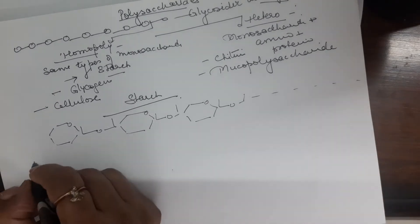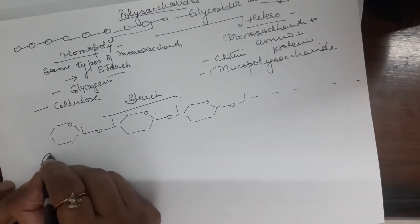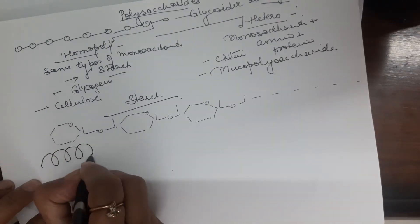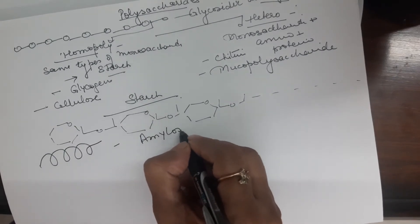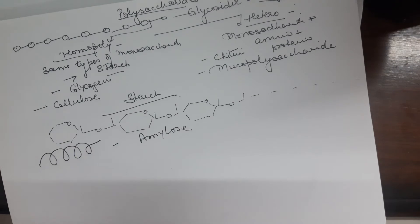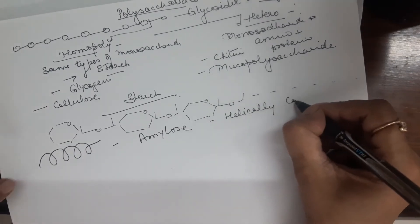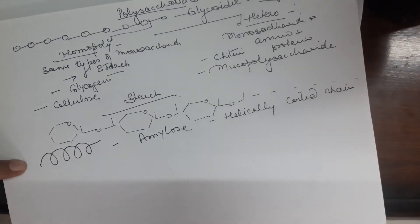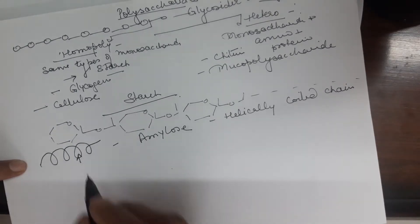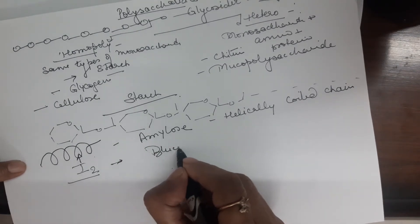Starch exists in two different forms. When this straight chain gets coiled like this, then this is called amylose. Amylose is a helically coiled chain. And we all know that starch gives blue-black color with iodine. Why? Because these helix can pull iodine in them and this gives the blue-black color.